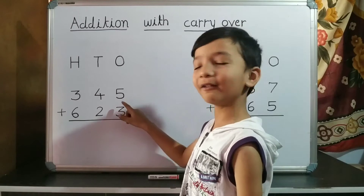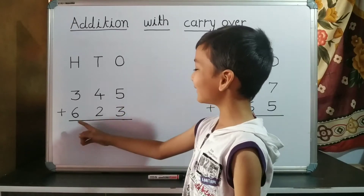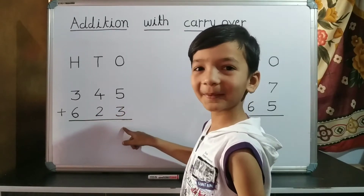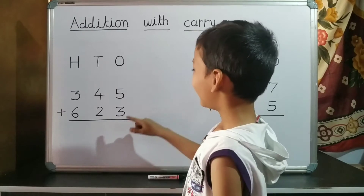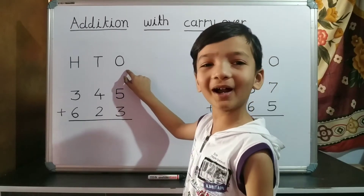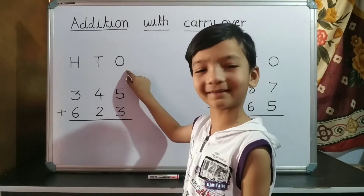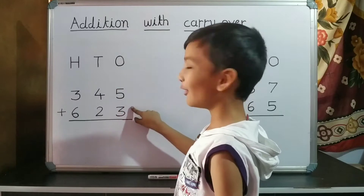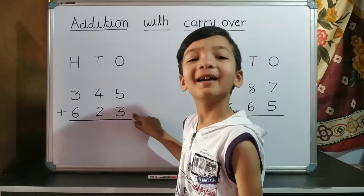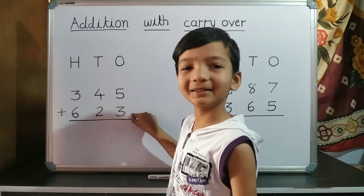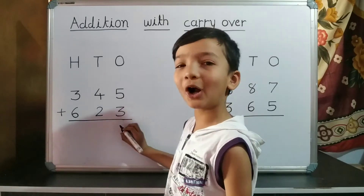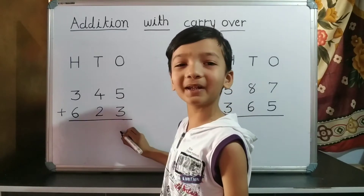345 plus 623. First we do addition of one's place. 5 plus 3 is 8. So we write 8 on one's place.